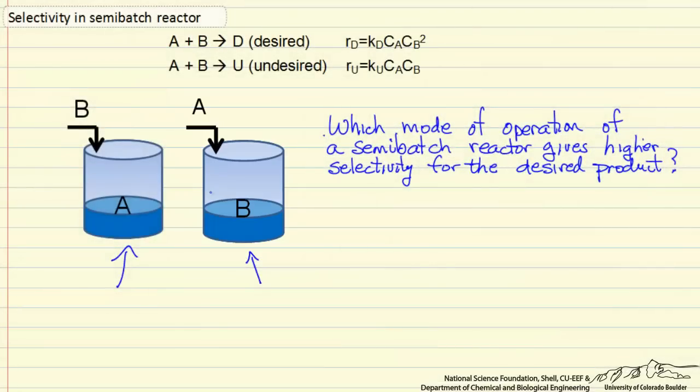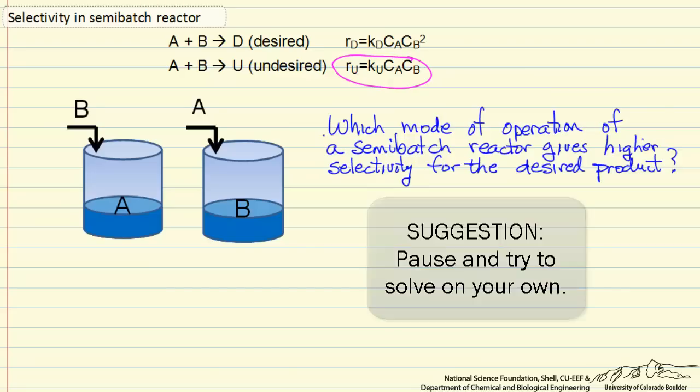And our question is, which mode of operation is going to give higher selectivity for the desired product? Our desired product D is first order in A and second order in B, whereas the undesired product U is first order in both of these species.